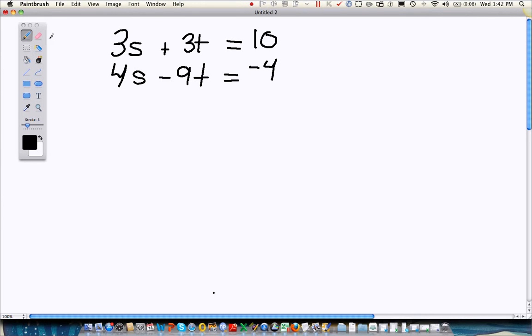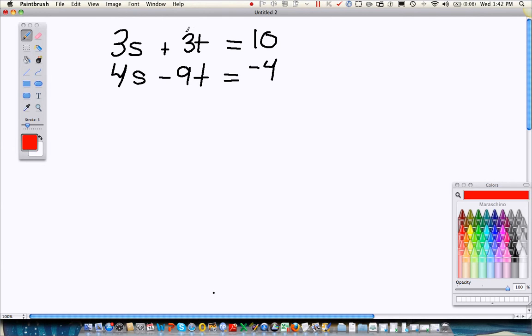Now it doesn't matter which variable you decide to get rid of. I'm going to go for the first one, so I'm going to get rid of the S's. And what I'm going to do is look at the numbers in front of the letter S, a 3 and a 4, and think to myself, what is the common denominator between these numbers?